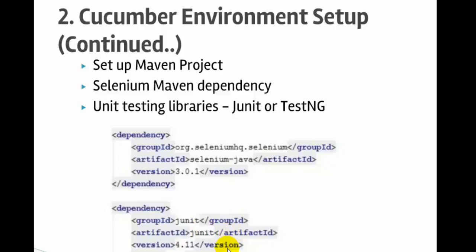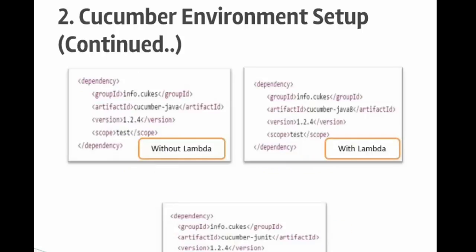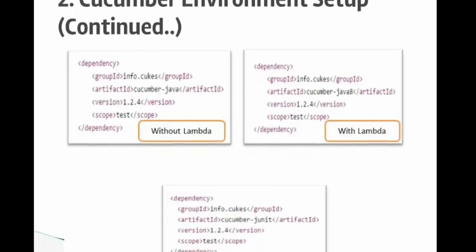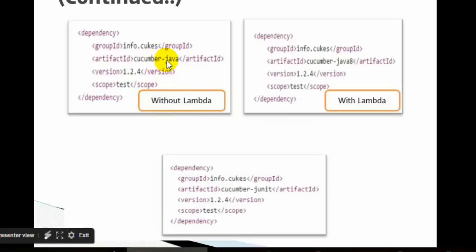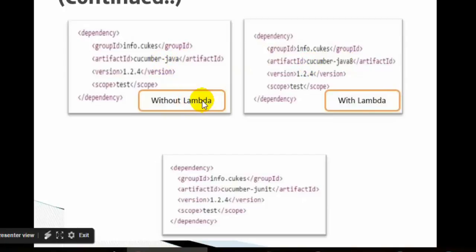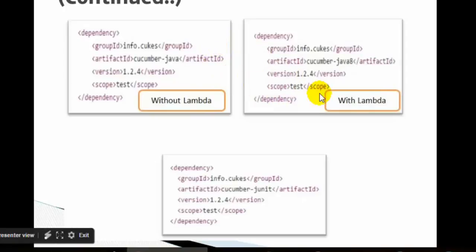You also need to download the JUnit library, because we will be writing tests in JUnit. To work with Cucumber and write steps in Java, you need the cucumber-java library. The group ID is info.cucumber and you can look for the latest version. There are two library options: cucumber-java and cucumber-java8. Both do the same thing, but cucumber-java is without lambda expressions. If you want to write steps using lambda expressions, use cucumber-java8. If you are not comfortable with lambda expressions, stick with cucumber-java.